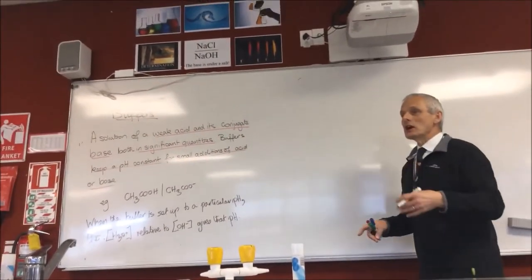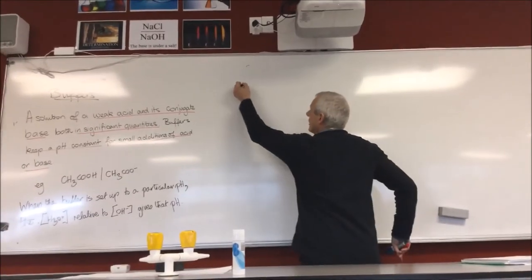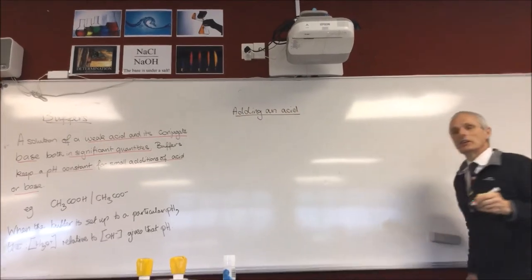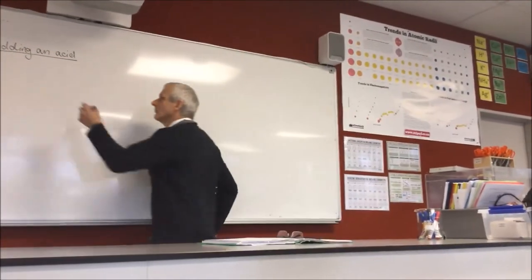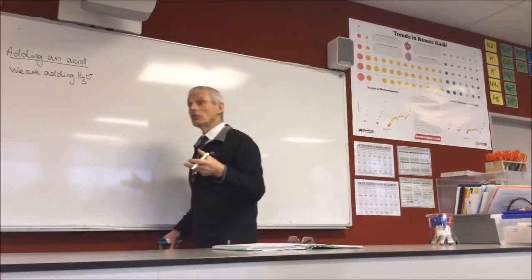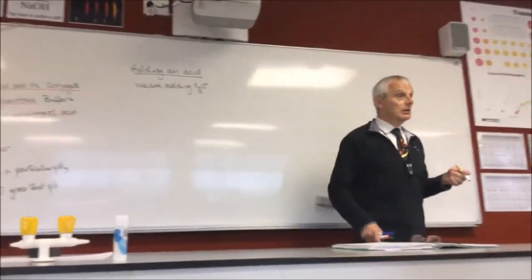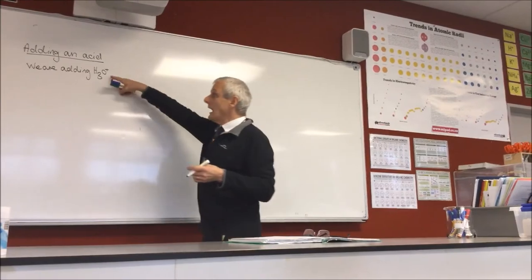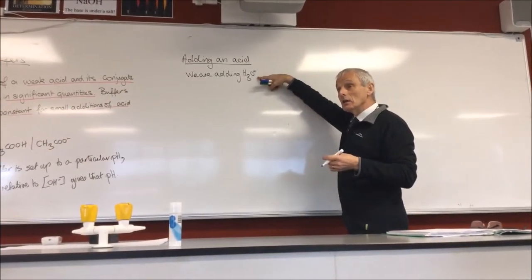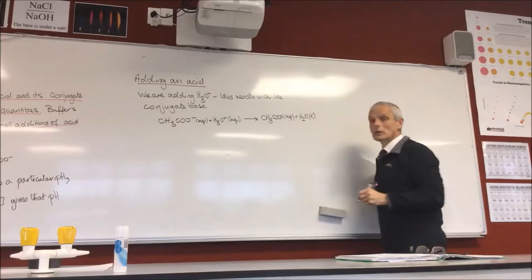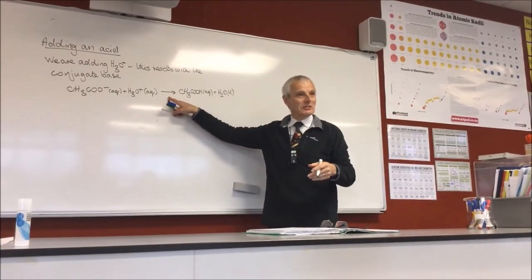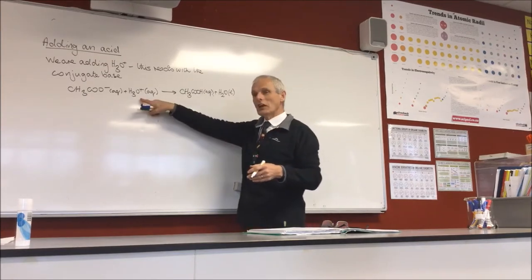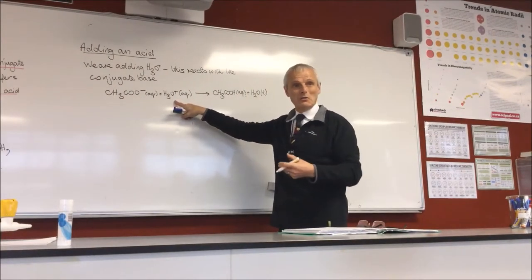Now we're going to add an acid or a base and see what happens. When we add an acid, we're adding H₃O⁺. If this wasn't a buffer, by adding H₃O⁺ the concentration of H₃O⁺ would go up and so the pH would go down. But that's not the case here — we have something that will react away this added H₃O⁺. Provided it's only a small amount, this will react with the conjugate base. Notice it's a one-way reaction — it's a neutralisation reaction. So the overall effect is that you're not changing the concentration of H₃O⁺; as you're adding it in, it's being removed.